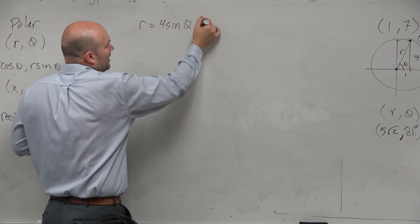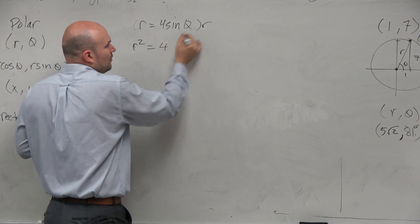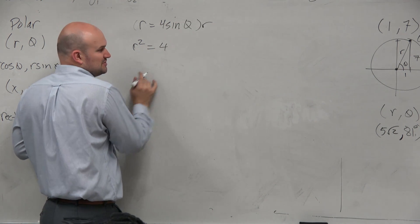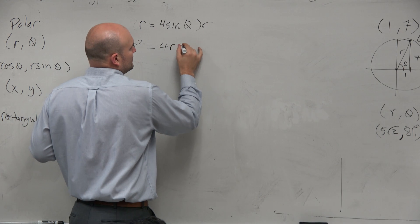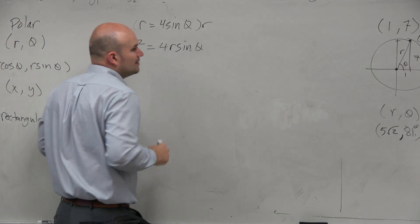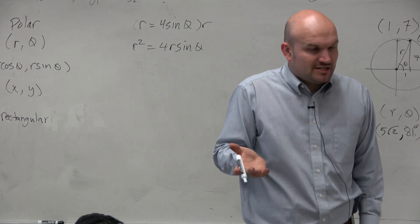So you multiply by r. Now you obtain r squared equals 4. I'm just going to sandwich it between the 4 and the sine. But by multiplying by r, I'm not changing the equation.